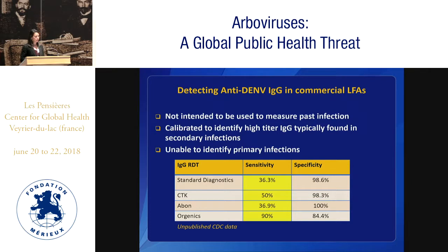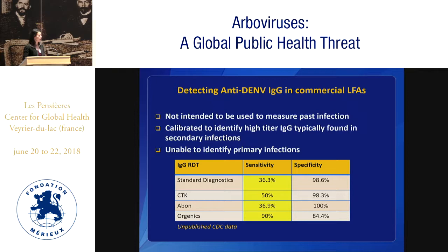I've been asked many times whether you can use a rapid diagnostic test — one of the commercial lateral flow assays — to measure past infection. These tests were not calibrated to do that. They were calibrated to look at the high IgG level seen in secondary infections, so you're unable to identify any of the primary infections. We actually used the CDC IgG ELISA for this testing — this was the panel we looked at for NS1 in the 2014 multi-country study with WHO. You can see 36% for standard diagnostics, 50% for CTK, 36% for Avalon — and using an IgG LFA rapid diagnostic test to determine past immunity is not a really good idea because these companies have calibrated their tests to look for recent infection, particularly secondary infections, which have very high titer IgGs.